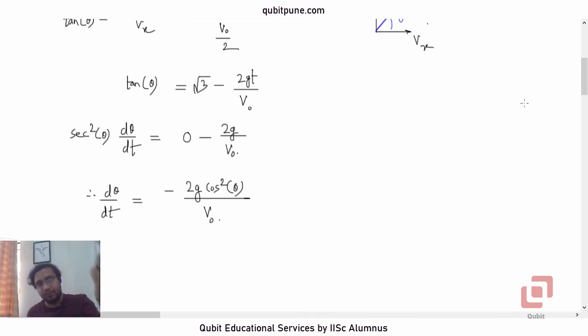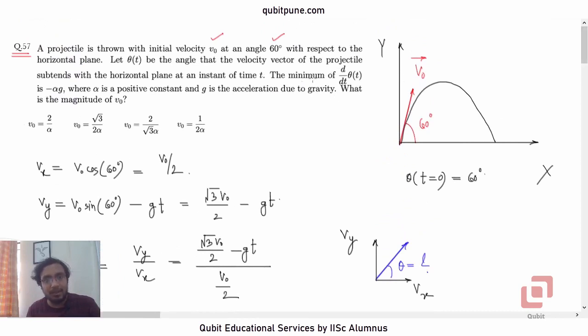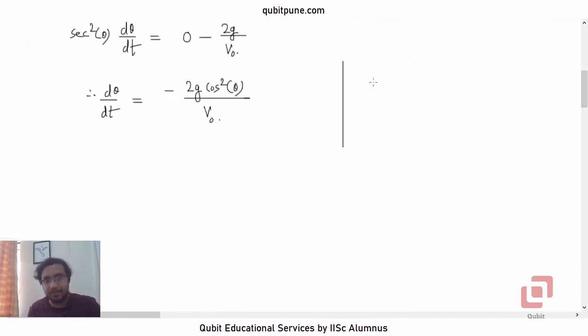Now, let us go back to the problem momentarily and look at the minimum value of d theta by dt that they have given. The minimum of d theta by dt is negative alpha g. So, we can actually spot alpha here. But this is the minimum value. So, can we determine the minimum value of this? Of course, we can. What is the minimum value? The minimum value of this expression which has a negative sign here will be negative 2 g by v0.